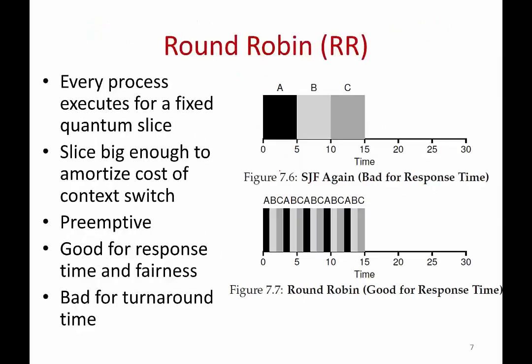Another simple policy is Round Robin. You put all processes in a queue and execute the first process for some time, then the next, then the next, cycling back to the first. Every process runs for a fixed quantum — typically around a millisecond or 10 milliseconds. It can't be too small, like a microsecond, because it takes a microsecond just to switch. You want to run a process for a reasonable time so the context switch overhead is amortized.